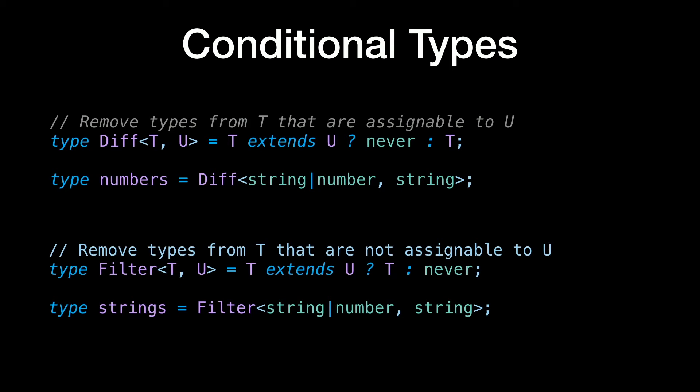We can also create a Filter type — the opposite of Diff — by flipping T and never on the sides. If we filter a union of string and number by string, we get only string back. Conditional types are quite powerful even at this basic level.